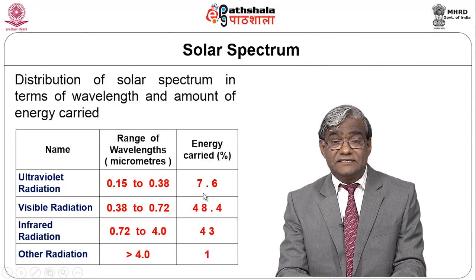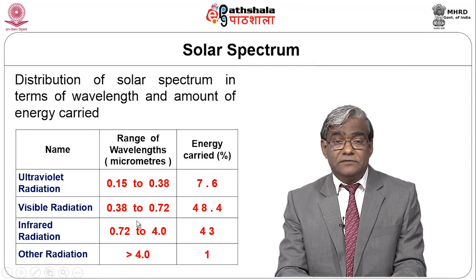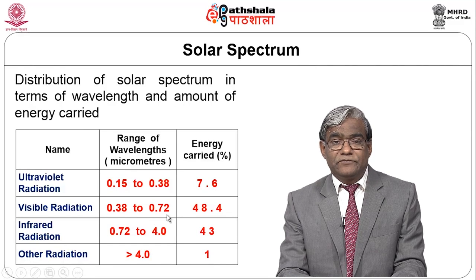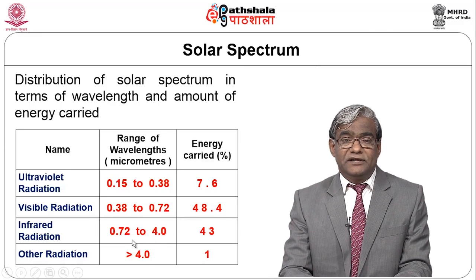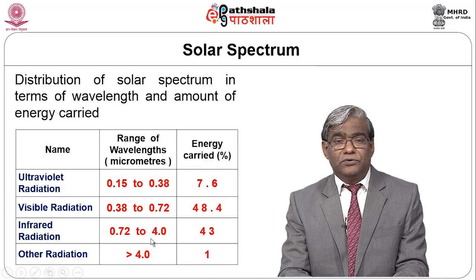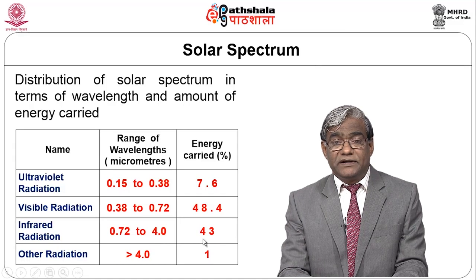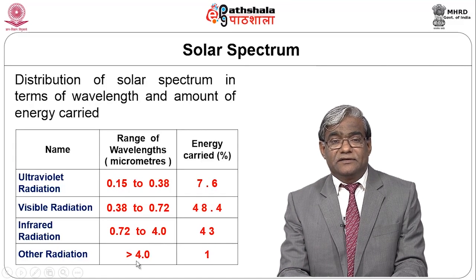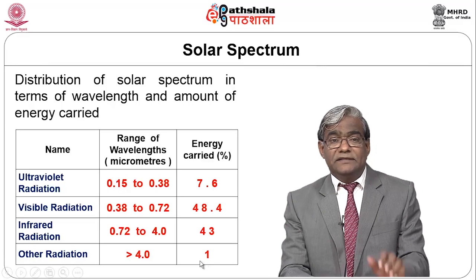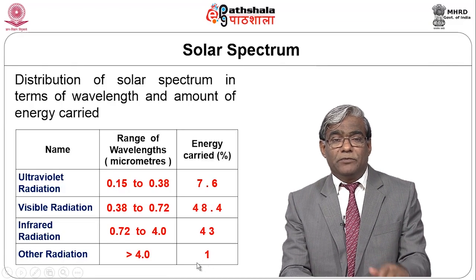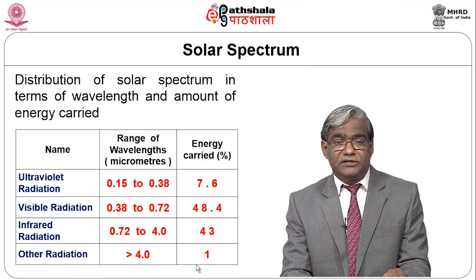Visible radiation spans 0.38 to 0.72 micrometers and carries about 48.4% of the energy. Infrared radiation spans 0.72 to 4.0 micrometers and carries about 43% of the energy. Other radiation beyond 4.0 micrometers carries just about 1%. The solar spectrum is thus a combination of UV, visible, infrared, and other radiation.